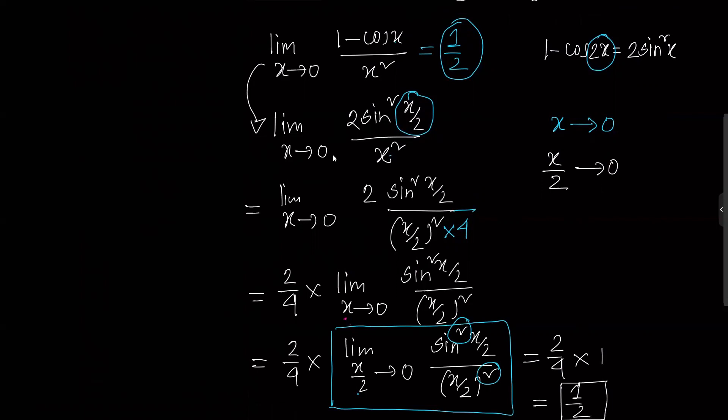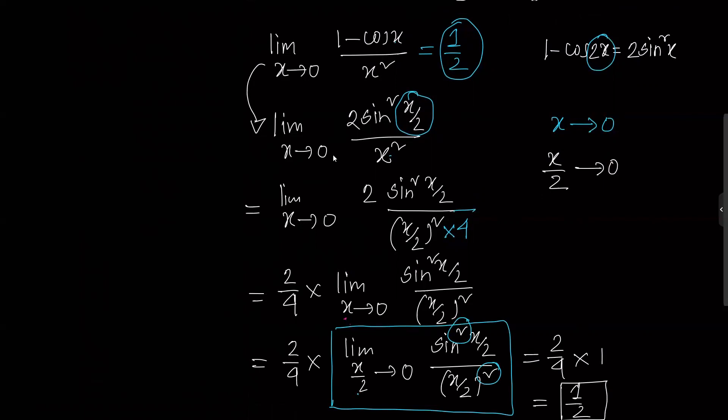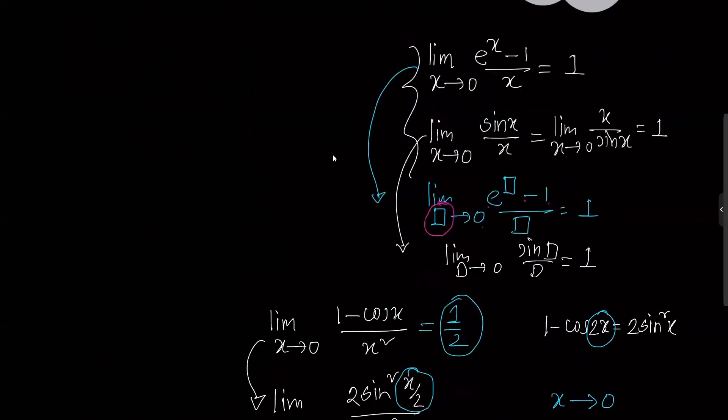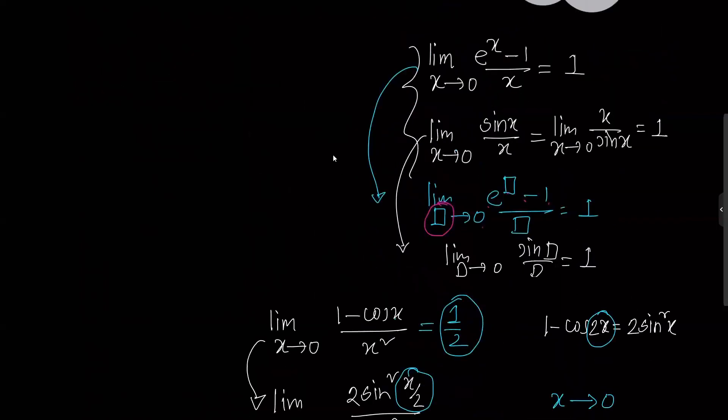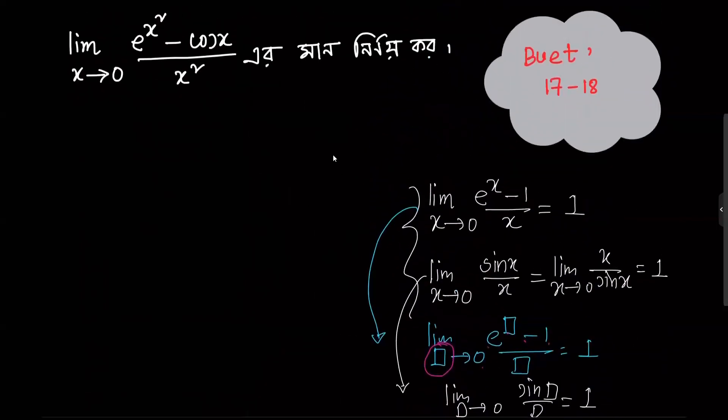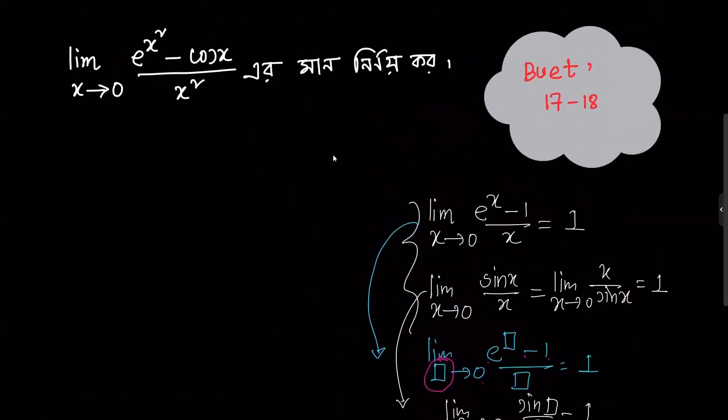The limit as x tends to 0 of 1 minus cos x divided by x squared equals one half. We applied this directly using the formula. That's the result.